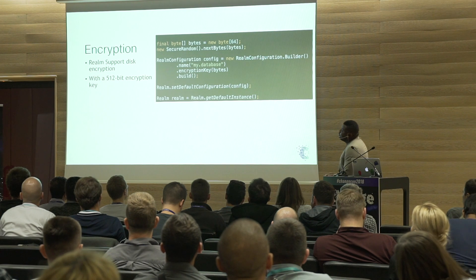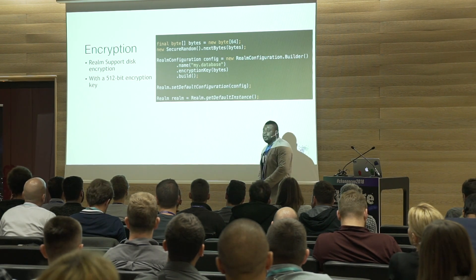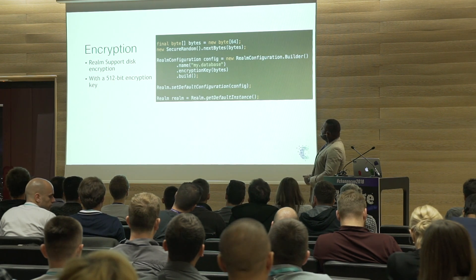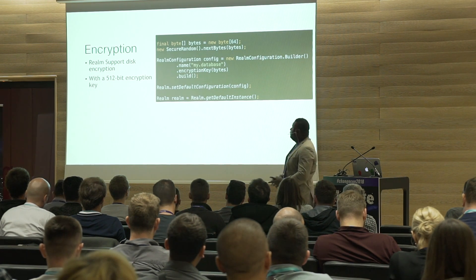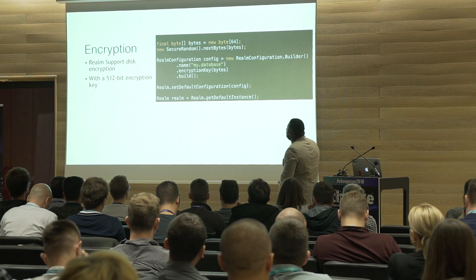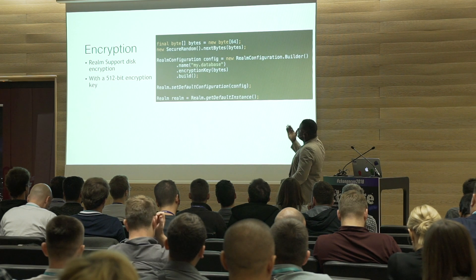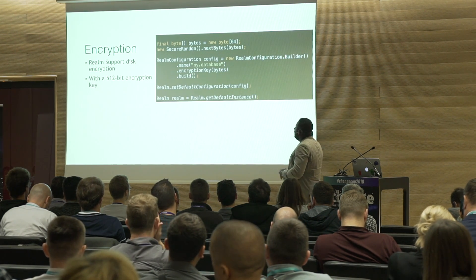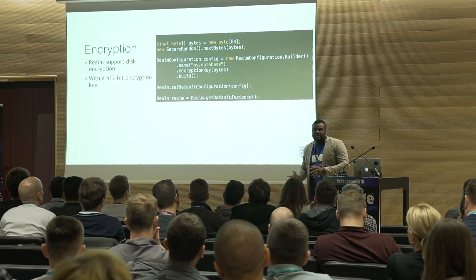Encryption. Realm also provides encryption support with a 512-bit encryption key. To define that, you just need to set it on your configuration object and then set the default configuration. It's best practice to do that right after you initialize Realm. Later on, to retrieve your Realm instance, you just call Realm.getDefaultInstance().